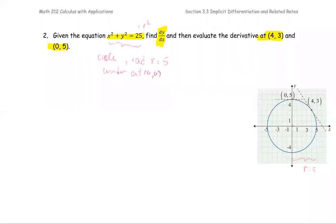Our goal is to find dy/dx, which is the slope of the tangent line. We have two locations where we need to find that value: the slope at the ordered pair (4, 3) and at the ordered pair (0, 5).